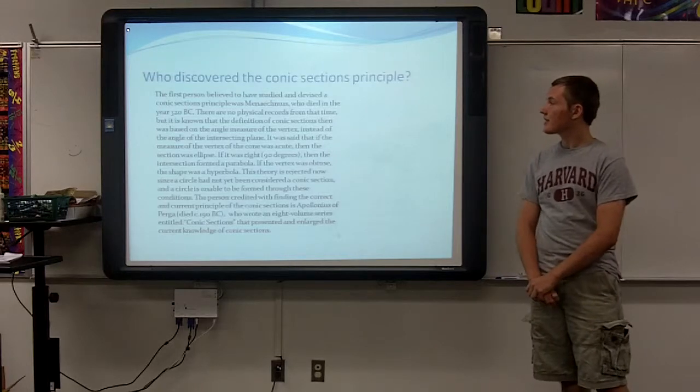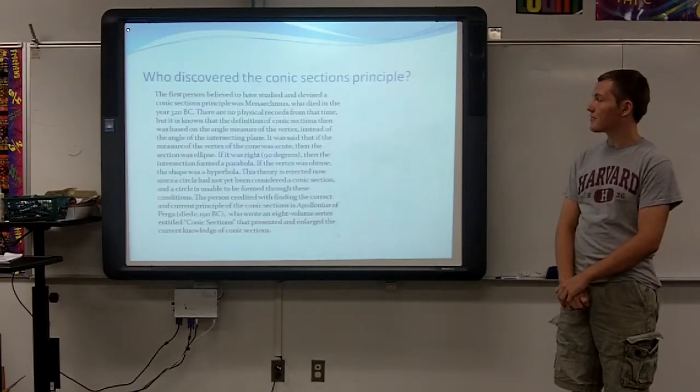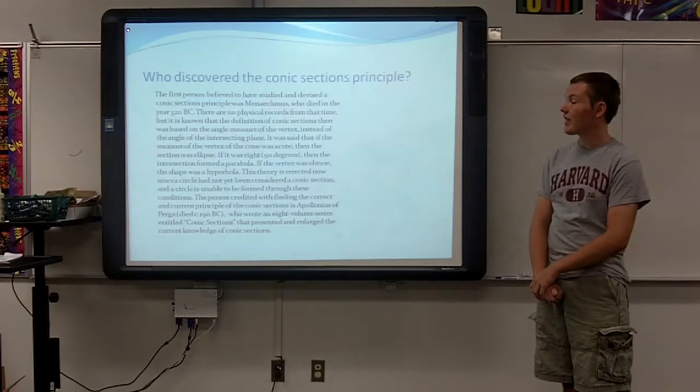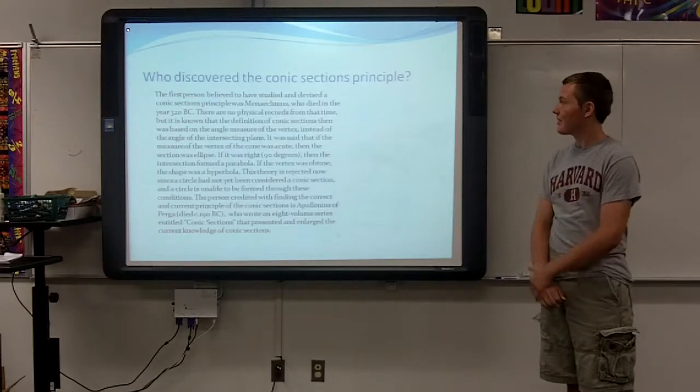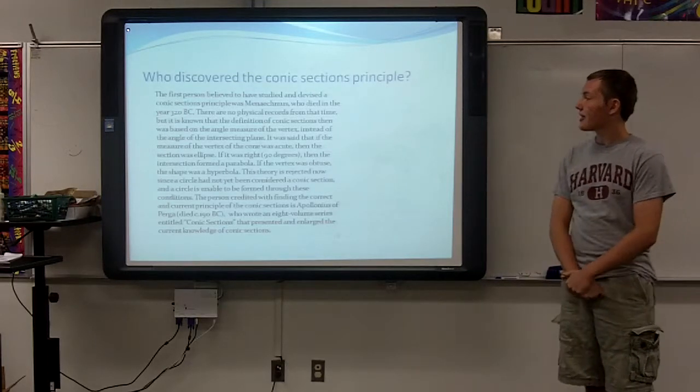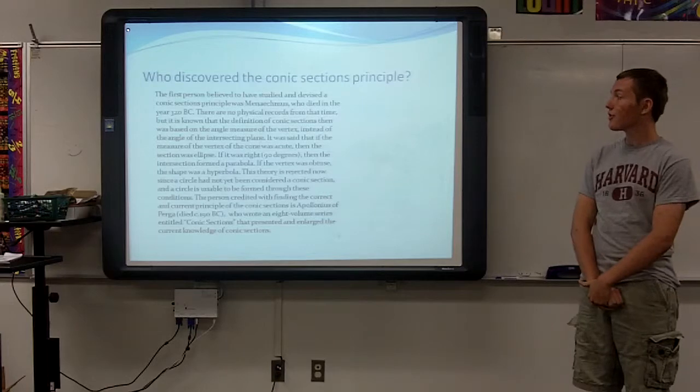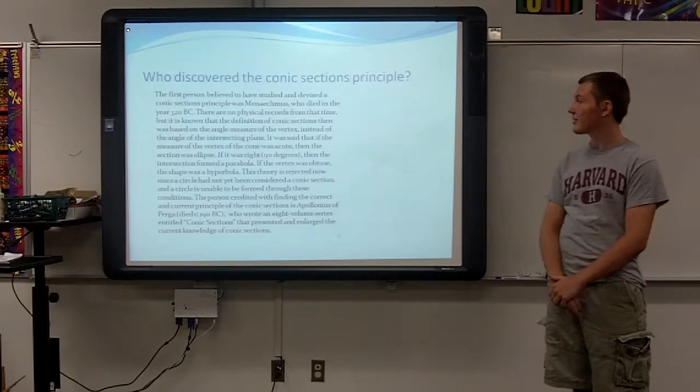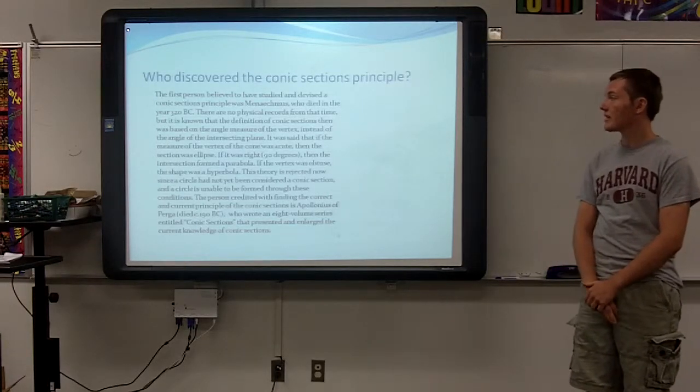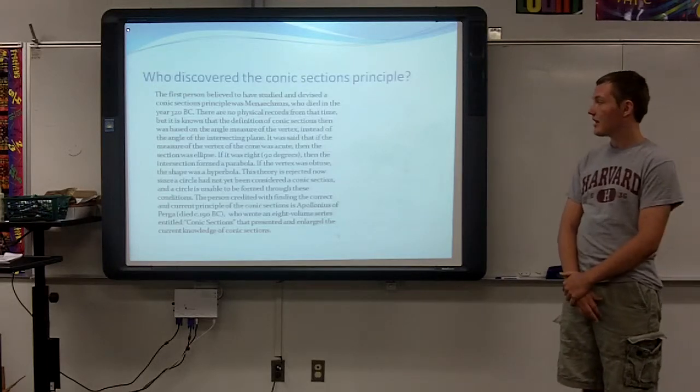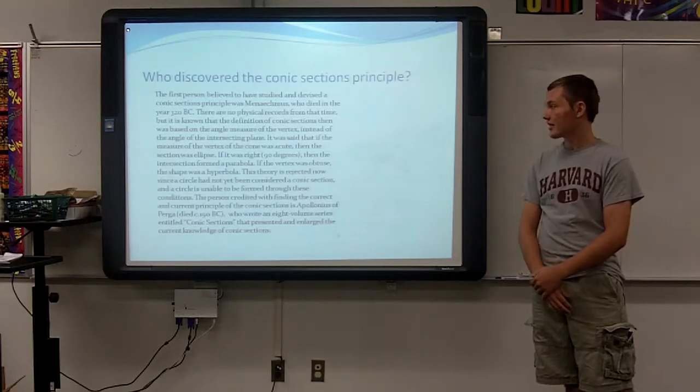The first person believed to have studied and devised a conic section principle was Menaechmus, who died in the year 320 BC. There are no physical records from that time, but it is known that the definition of conic sections then was based on the angle measure of the vertex, instead of the angle of the intersection plane.